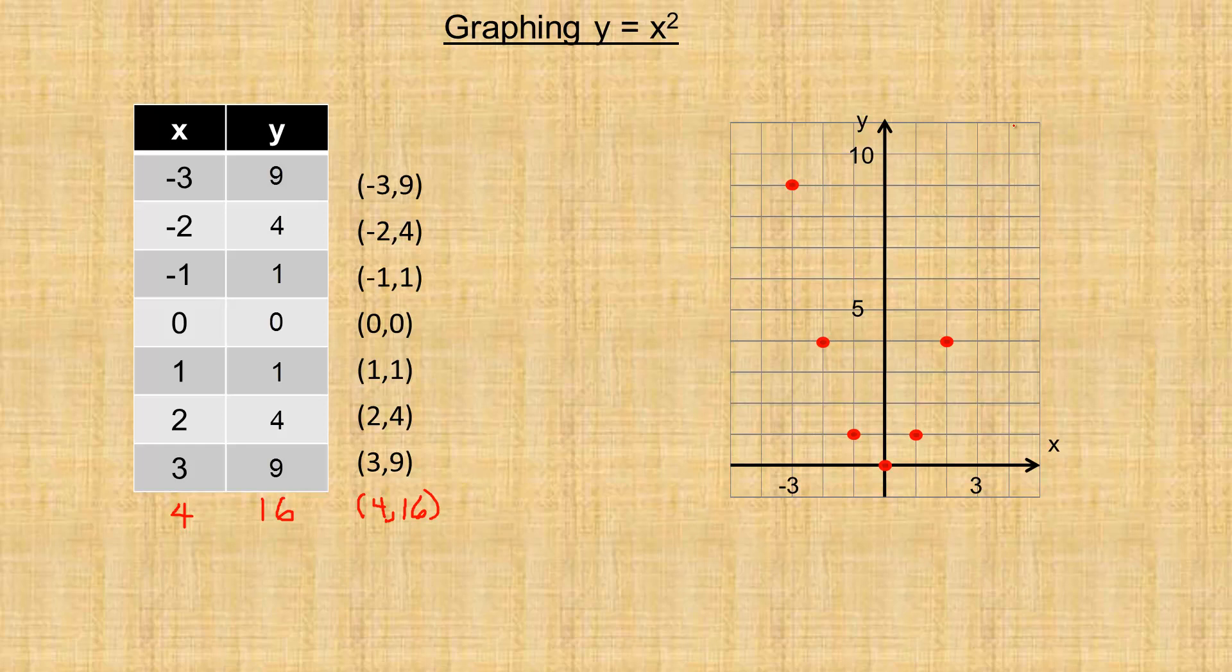That's 11 right there, 12, 13, 14. I'm off the top of the graph. So that's the reason I didn't use 4, negative 4, for example. There's my 3, 9 point back again.